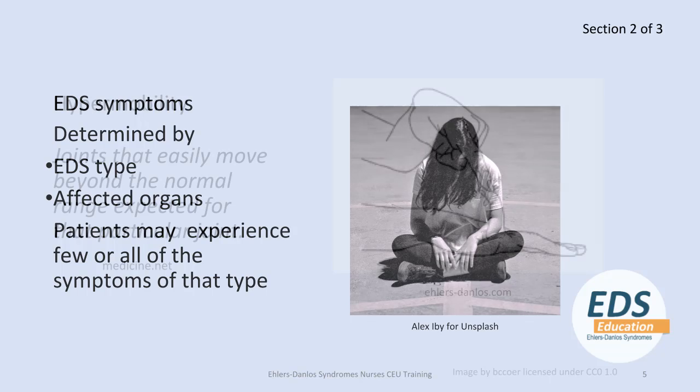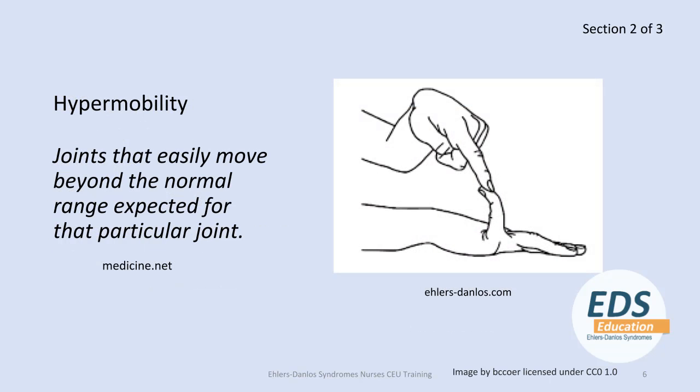The most common type of EDS is hypermobile EDS. The most common symptom is that a patient's joints, instead of moving freely and stopping at a certain point, will hyperextend. This can be a minimal hyperextension, which seems not to be a problem when you're young, perhaps as a dancer or gymnast, or you'll see people doing their party tricks, bending their thumb back to meet their forearm. But in other people, it is a huge problem — the joint can move back until it subluxes or dislocates, causing an extraordinary amount of pain.